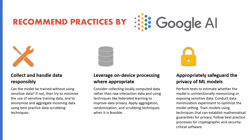Finally, appropriately safeguard the privacy of machine learning models. A few ways to do this include performing tests to estimate whether the model is unintentionally memorizing or exposing sensitive data. You can also conduct data minimization experiments to optimize the model setting and train models using techniques that can establish mathematical guarantees for privacy. There are also best practices that should be followed for cryptographic and security critical software.